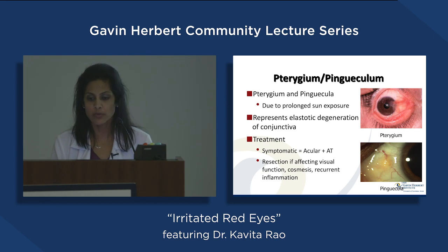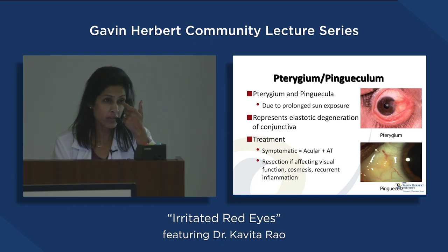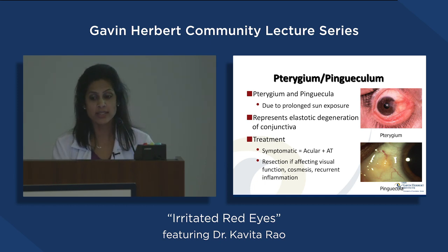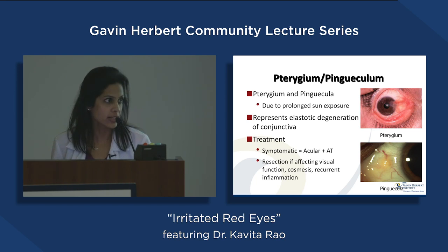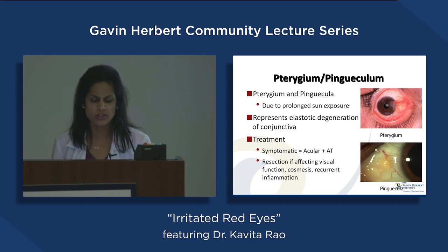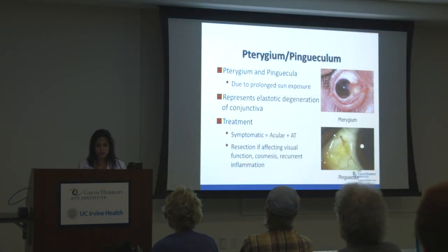Pterygium is usually due to sun exposure. We typically see it right by the nose or sometimes on the other side of the eye — excess tissue grows there from sun exposure. It can cause irritation, and we treat it with eye drops like artificial tears, or sometimes something stronger like a steroid drop.